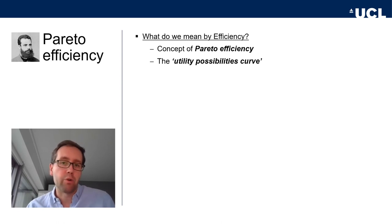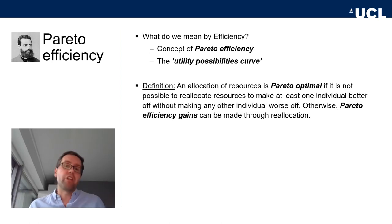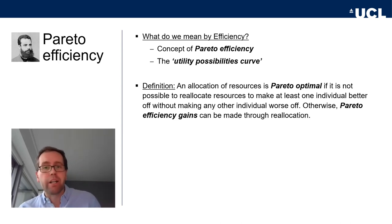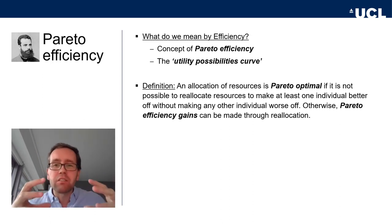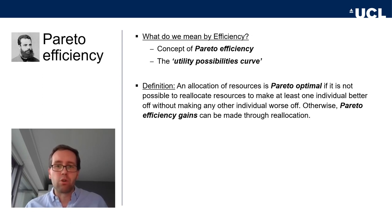You'll also see what is called the utility possibilities curve. The definition of Pareto optimality is that an allocation of resources is Pareto optimal if it is not possible to reallocate resources to make at least one individual better off without making anyone worse off. Otherwise, Pareto efficiency gains can be made through reallocation. So once we have allocated some resources between a few people, we can't make anyone better off without taking something away from someone — without making someone worse off.